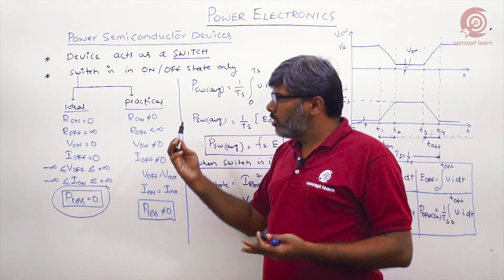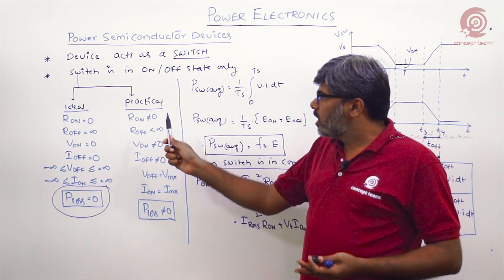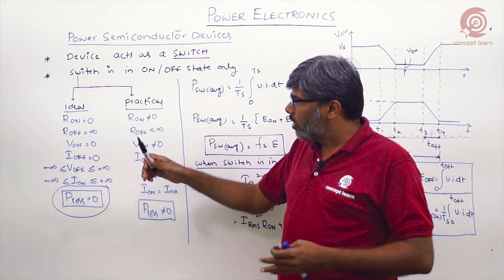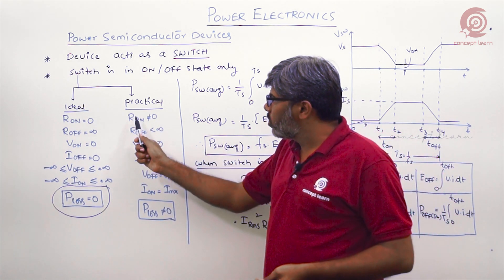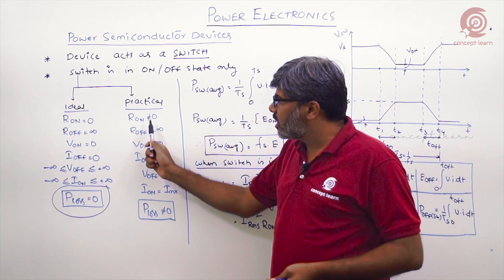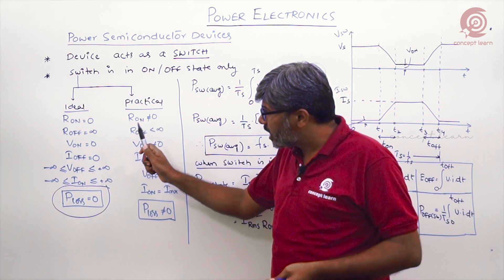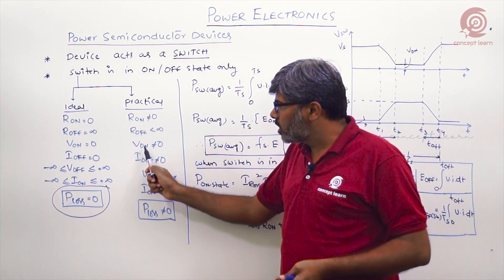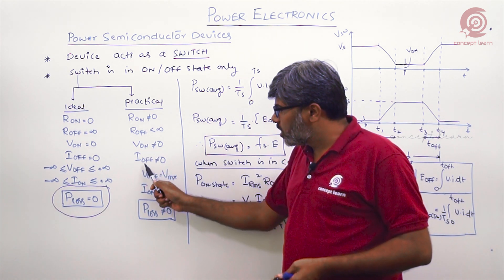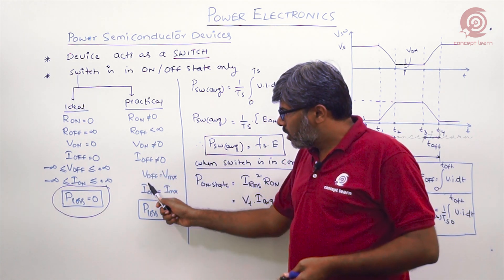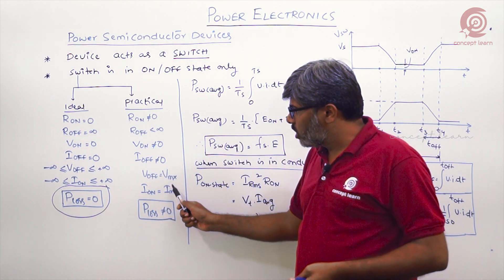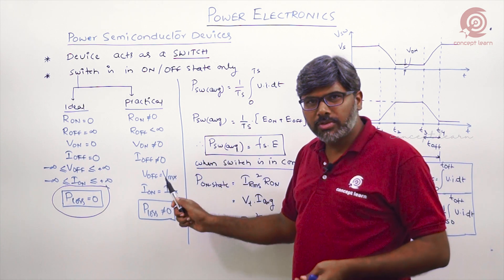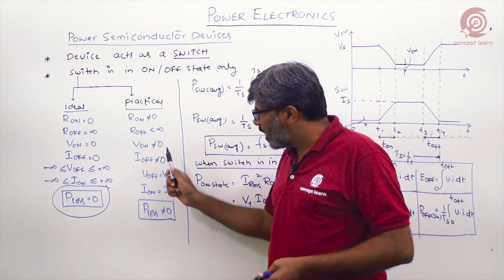For the practical switch — very important in competitive exams — the on-state resistance is finite, the off-state resistance is finite, the on-state voltage drop is finite, and both the off-state leakage current and the on-state current are finite. All these values are specified by the manufacturer in the datasheet.